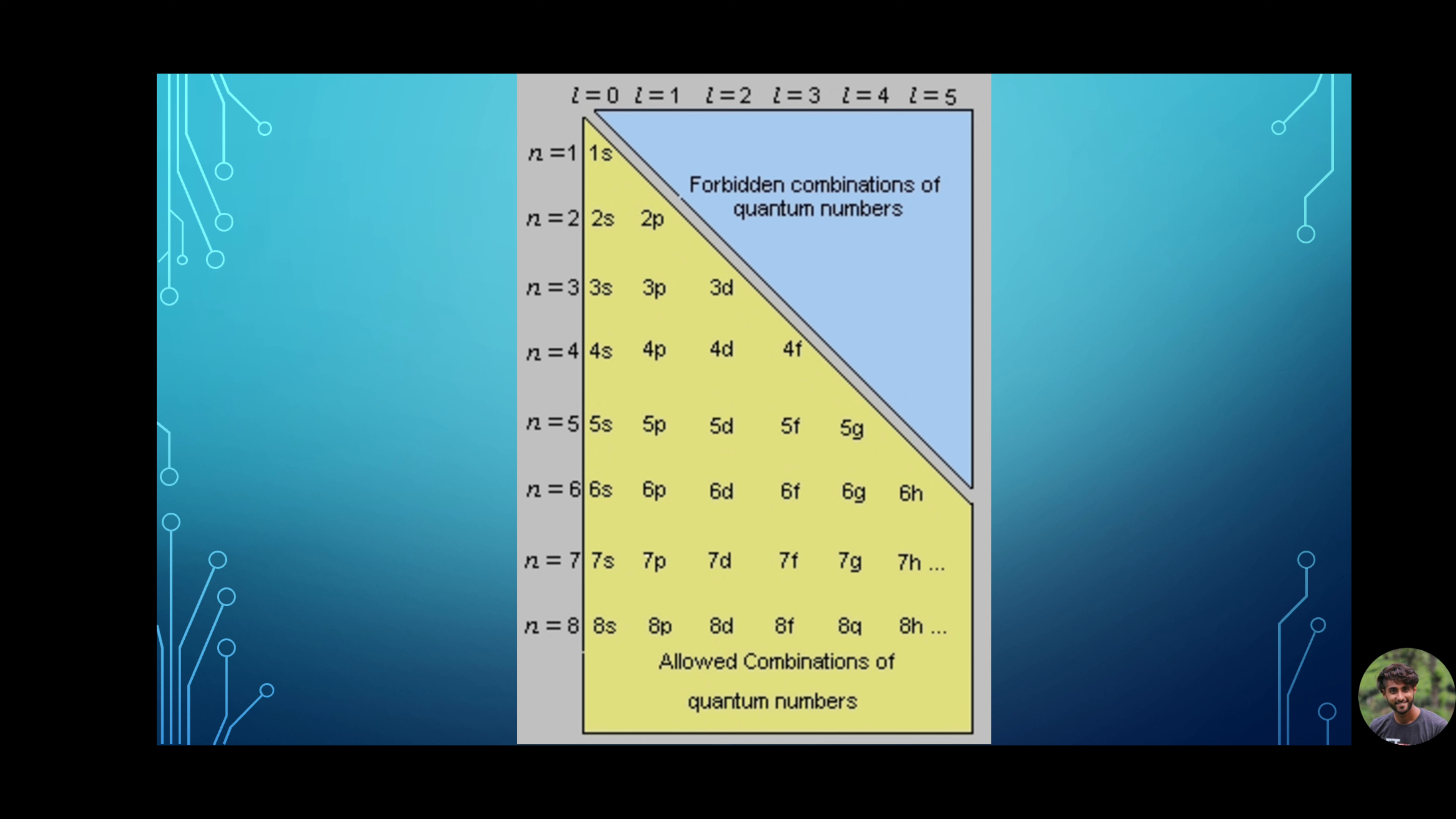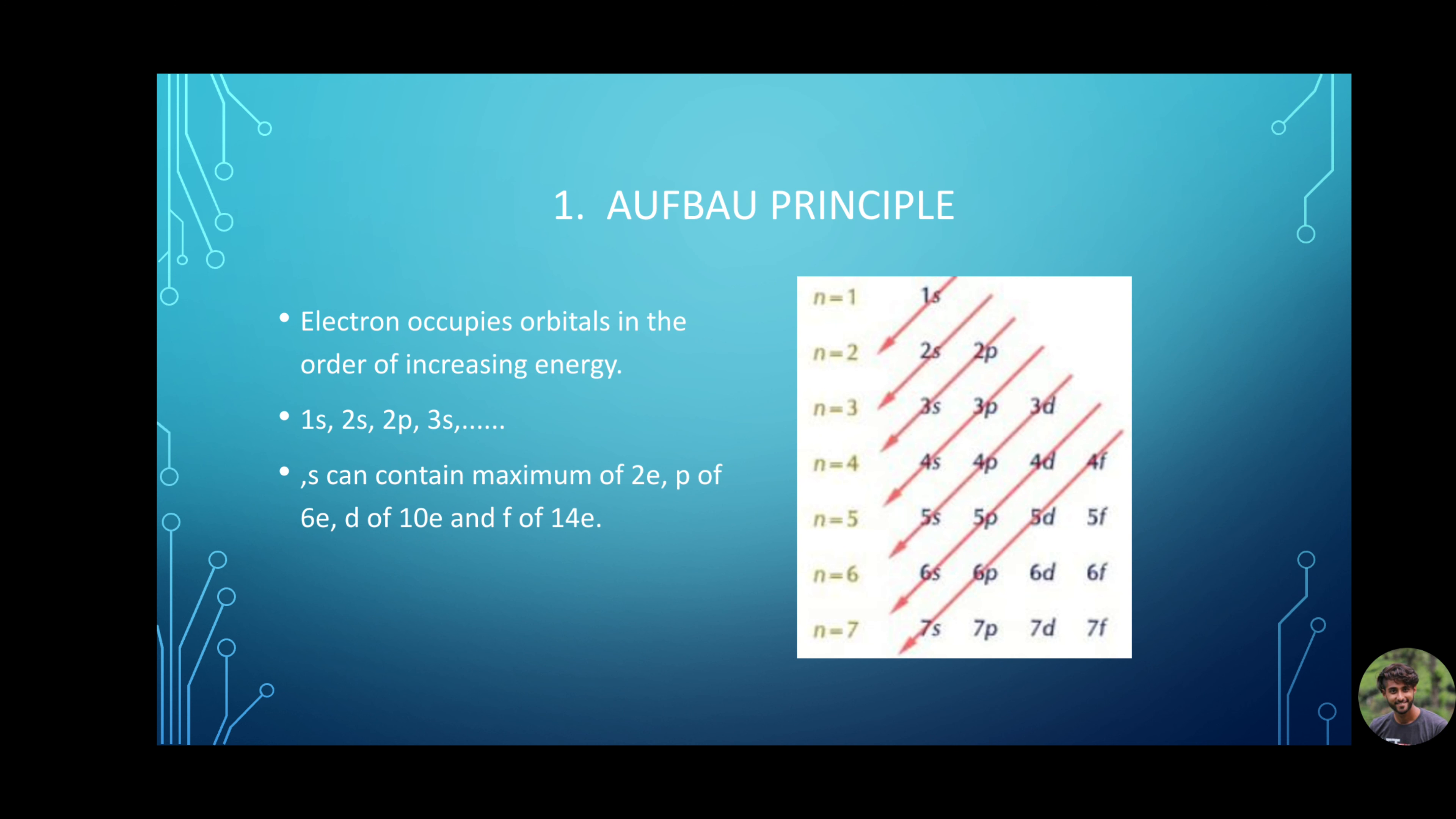The diagram here shows the electron orbitals and orbits. Let me add orbital filling rules along the way. Aufbau principle. Aufbau is a German word for building up. It says that electrons occupy orbitals in order of increasing energy as shown in the slide. First, 1s, then 2s, 2p, 3s and so on.